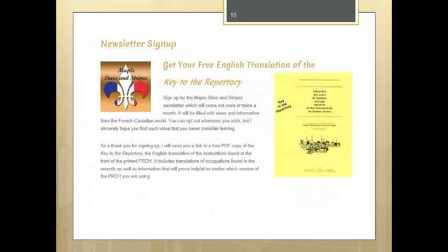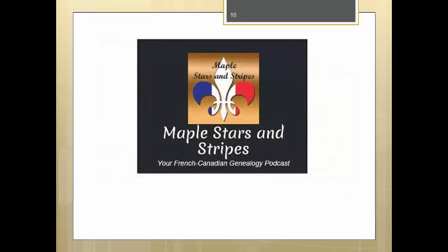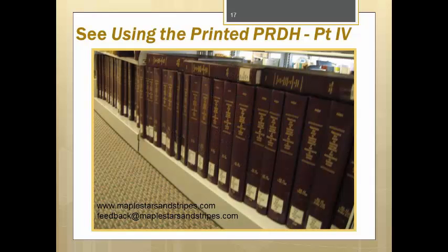These are the basics to using these volumes to research baptism, marriage, and burial records. You will occasionally come across different words not mentioned here, so a good French dictionary is always handy to have. But for the most part, each record is very similar to the others of its kind. If you'd like your own PDF copy of the key to the repertory — the English translation of the instructions for how to use the PRDH — head over to maplestarsandstripes.com/newsletter. To learn more about all three PRDH formats, go to the podcast show notes for the PRDH episode at maplestarsandstripes.com/26. In part four, the last video in the series, we're going to look at how to read some of the lesser known records. Please join us for using the printed PRDH part four.